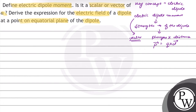The dipole moment takes direction from minus Q charge to plus Q charge. In vector form, electric dipole moment can be represented as P vector equal to Q into D vector.